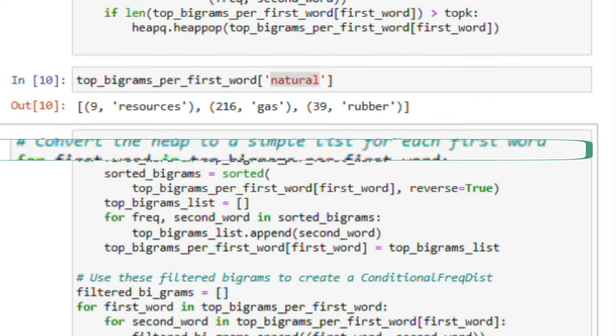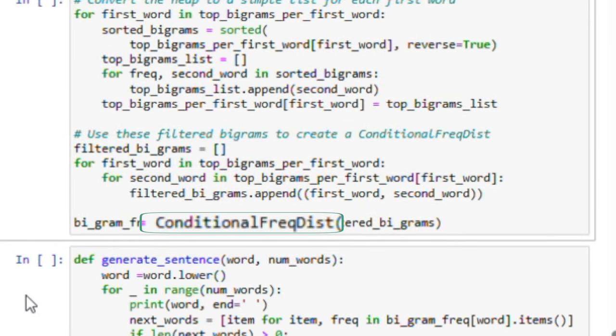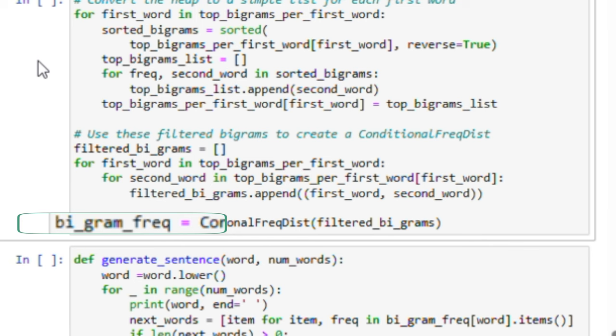Using these filtered bigrams, we create a new conditional frequency distribution. This refined distribution keeps top K words, in this case top three words, as options to become the next word given a word.